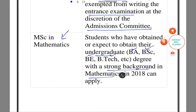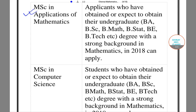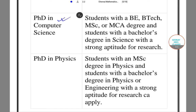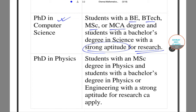For courses like M.Sc. in Application of Mathematics or M.Sc. in Computer Science, the same undergraduate degree requirement applies. For PhD programs, the person must have a bachelor's degree in science and should have a strong aptitude for research.